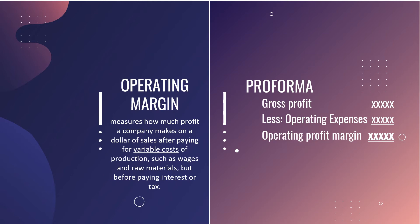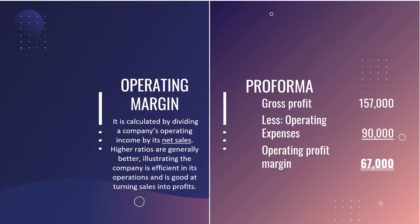The pro forma is: Gross Profit less Operating Expenses equals Operating Profit Margin. Operating margin is calculated by dividing a company's operating income by its net sales; higher ratios are generally better, illustrating the company is efficient and good at turning sales into profits. For XYZ Trading — which has no finance charges like interest expenses and income tax — the gross profit of 157,000 less operating expenses of 90,000 gives an operating profit margin of 67,000. This means the business realized an income of 67,000 during the year after deducting cost and operating expenses from sales.